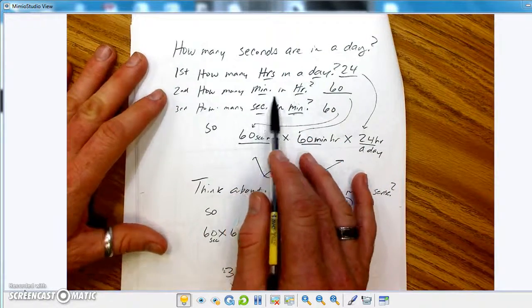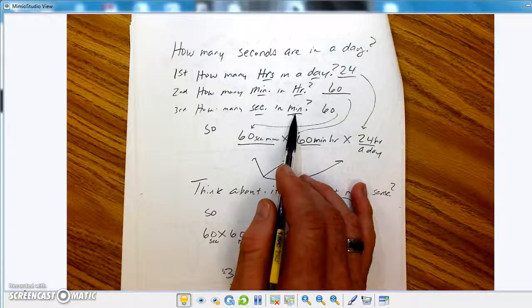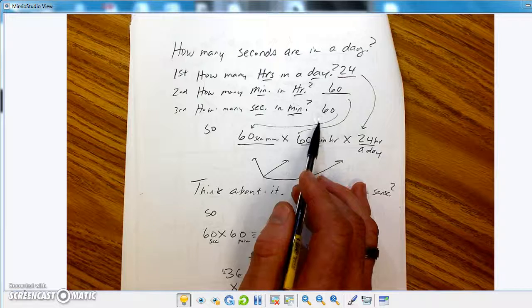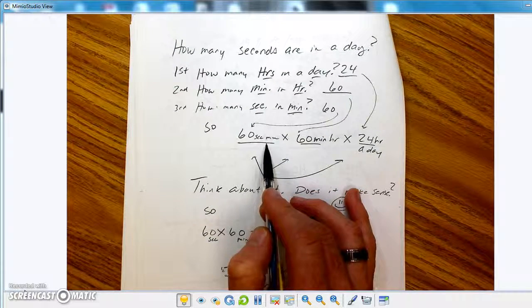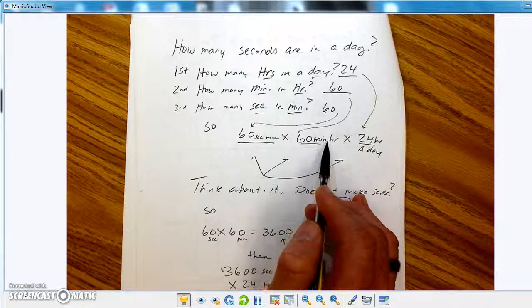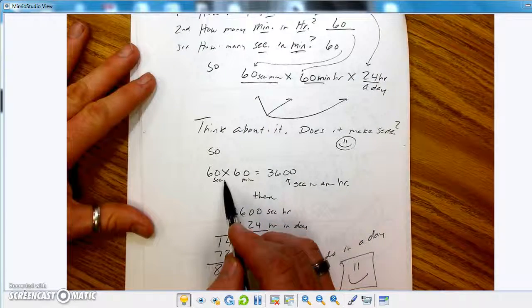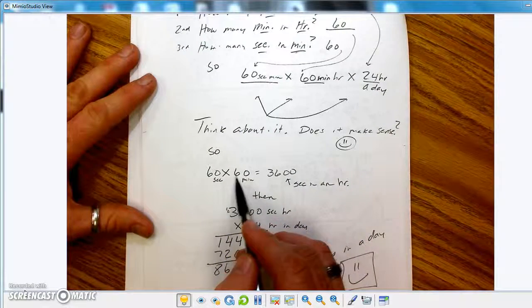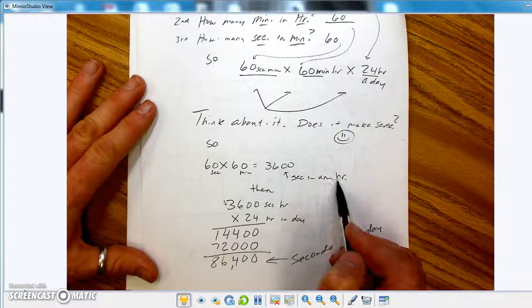So then how many minutes are in an hour? There's 60 minutes in an hour. Okay. How many seconds are in a minute? There's 60 seconds in a minute. Okay, so 60 seconds in a minute times 60 minutes, because 60 minutes is an hour, and then times 24 hours in a day.